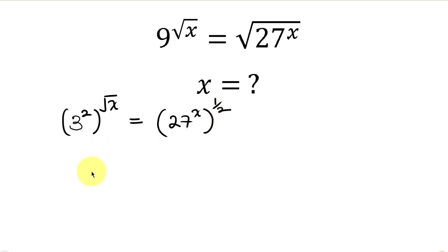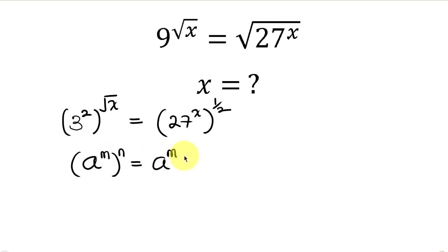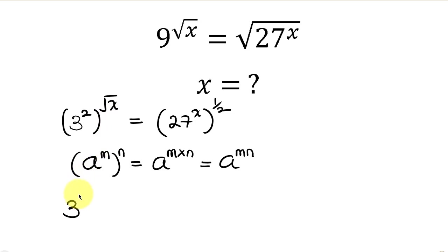Our next step is to apply the law of indices that says when you have a to the m, raised to the n, this is the same as a to the m times n — the powers multiply. Applying this to both sides: the left becomes 3 to the 2 times the square root of x, giving 3 to the 2√x. The right hand side becomes 27 to the x times one half, which is x over 2.